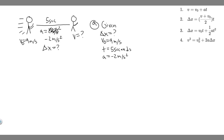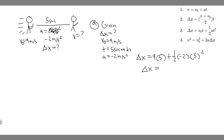We have three kinematic variables, so we can solve for the last one. The equation to use is the third one: Δx = v₀t + ½at². We have v₀, t, and a, so we can solve for delta x. Plugging in: Δx = 9 × 5 + 0.5 × (−2) × 5² = 45 − 25 = 20 meters. So delta x equals 20 meters — that's how far she travels, and that's the answer to part A.